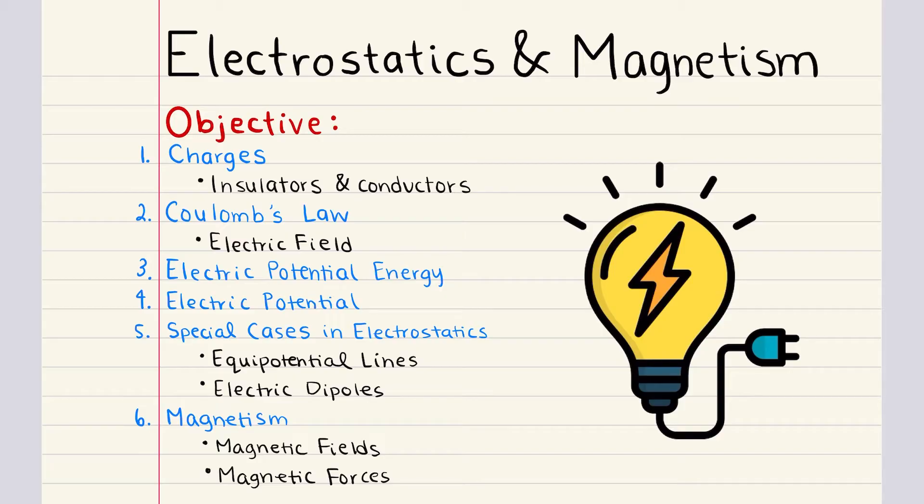First we're going to discuss charges. We're going to explore what charges are, the types of charges, positive and negative, and how they interact with one another. This objective will also include a discussion on insulators which don't transfer charges easily and conductors which do.